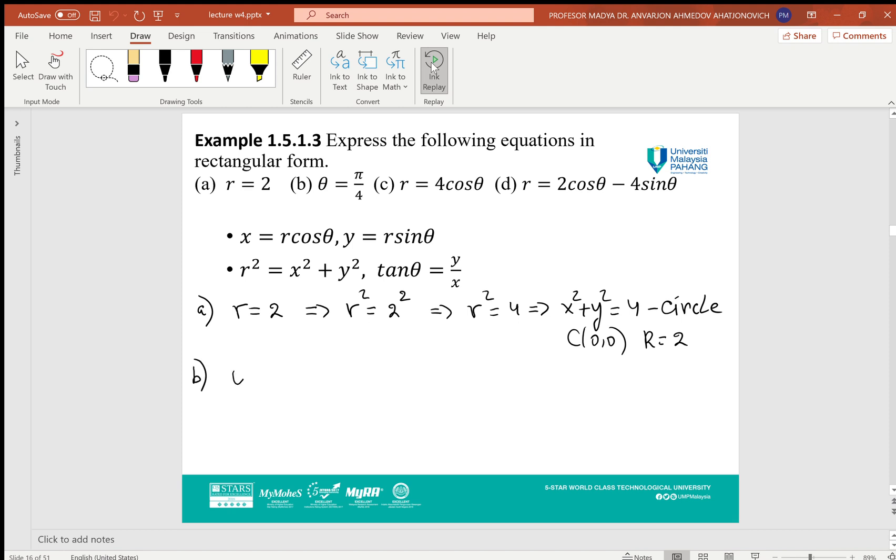Part b: θ = π/4. In order to transfer to rectangular, we take the tangent of both sides, which gives tan θ = tan(π/4) = 1. Since tan θ = y/x, we get y/x = 1, or y = x, which is actually a straight line.